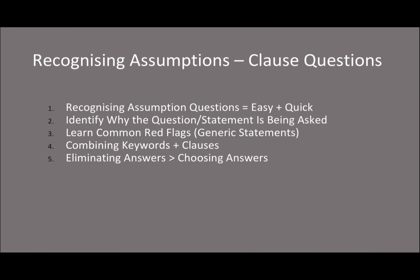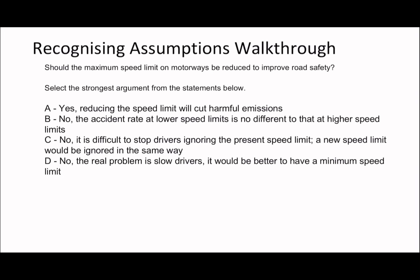Let's go through the first recognising assumption question. The clause gives direction to a question. Here's the question: 'Should the maximum speed limit on motorways be reduced to improve road safety?' The clause is 'to improve road safety' because it gives direction. The main part is 'should the maximum speed limit on motorways be reduced?' You can check if you've identified the clause correctly by removing it — the rest of the question should still make sense, and here it does.